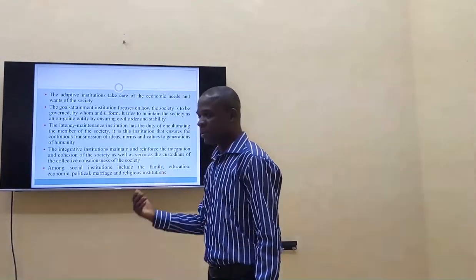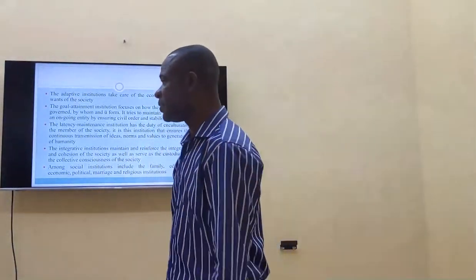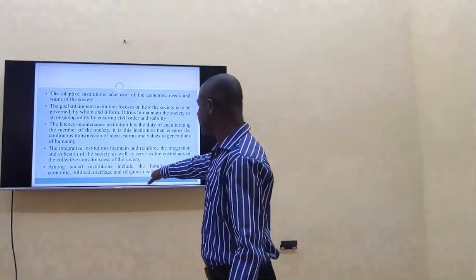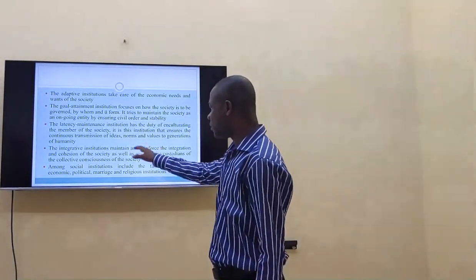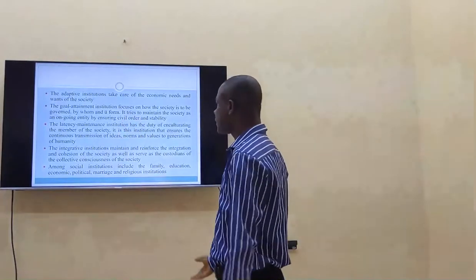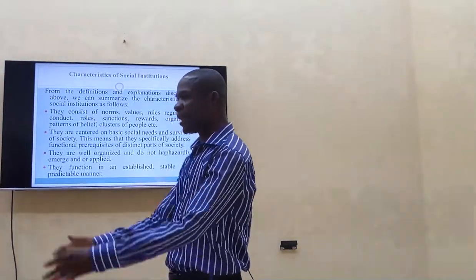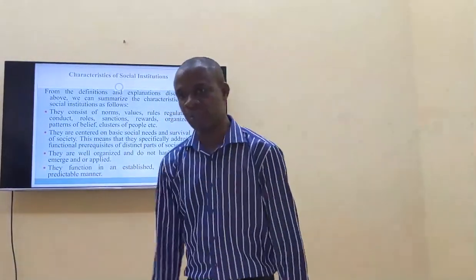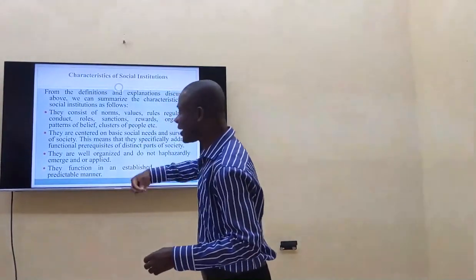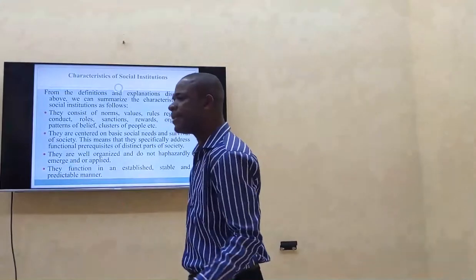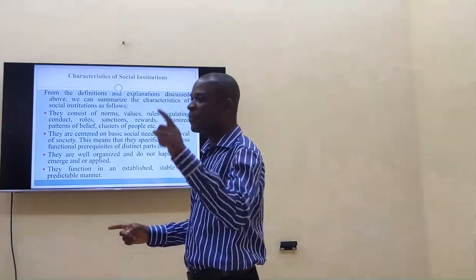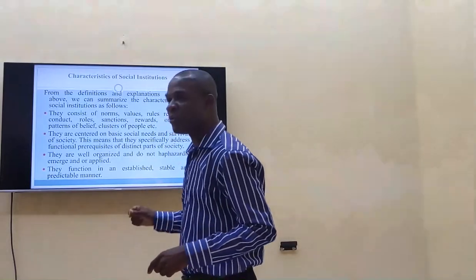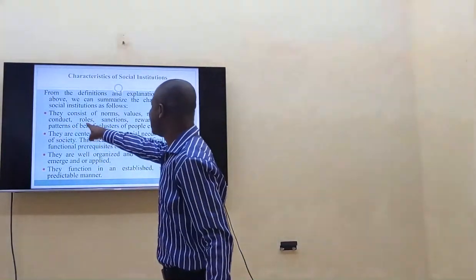Examples of social institutions include the family, education, the economy, politics, marriage — all these are forms of social institutions. Now, what are the characteristics of social institutions? How do we know what a social institution is? Just as you can identify a person by their behavior, social institutions also have identifying features. Number one, they consist of norms, values, rules regulating conduct, sanctions, rewards, organized patterns of belief, and closeness of people.